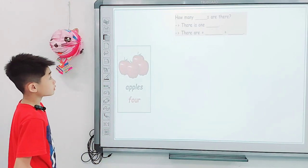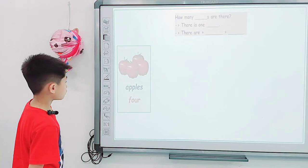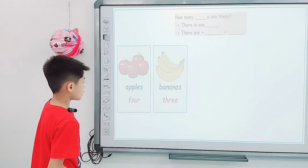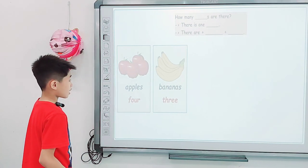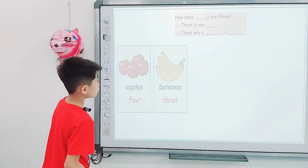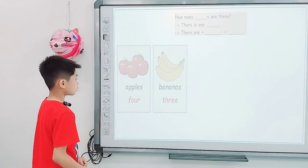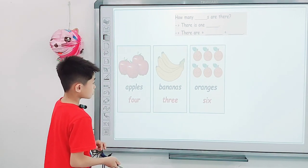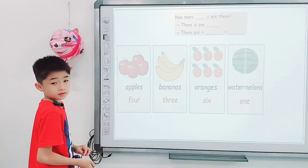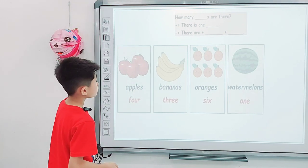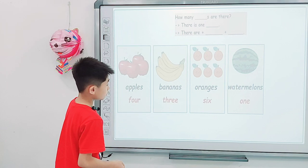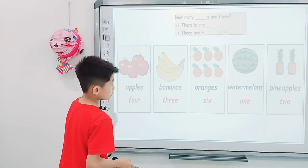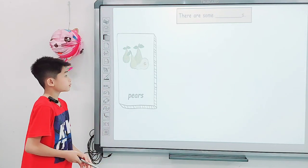Which you listen to me. How many apples are there? There are four apples. How many bananas are there? There are three bananas. How many oranges are there? There are six oranges. Good job. How many watermelons are there? There are eight watermelons. How many pineapples are there? There are three pineapples. Good job.